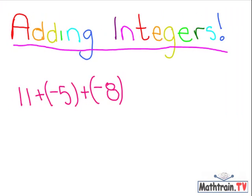I'm Bob. And I'm Bob. And we're going to teach you how to add integers. So we're going to do a problem. 11 plus negative 5 plus negative 8.